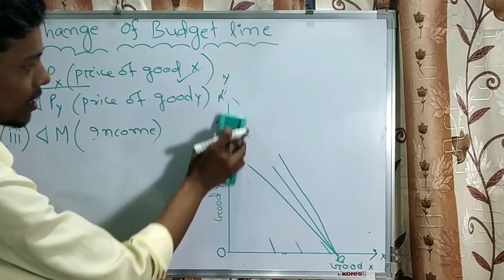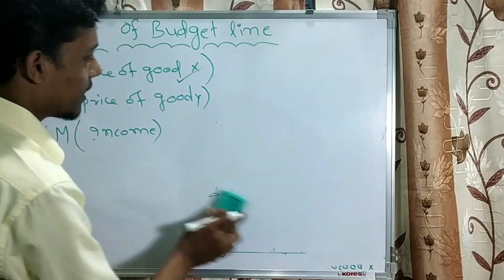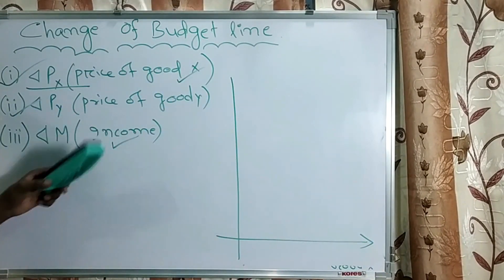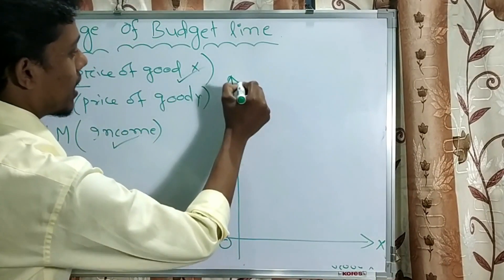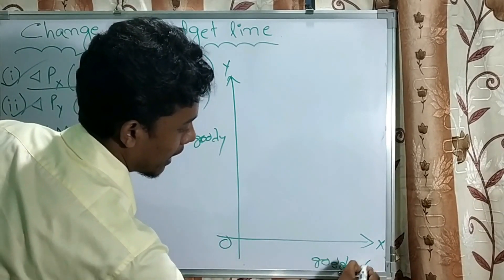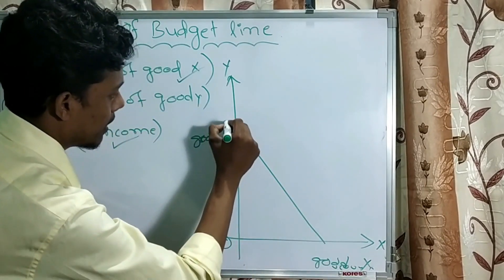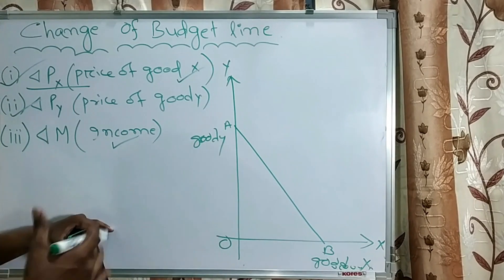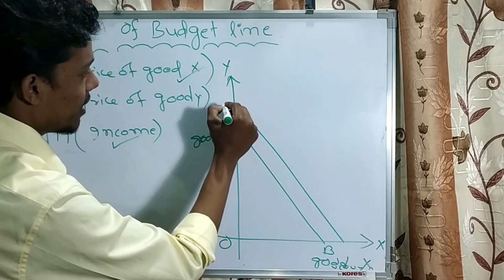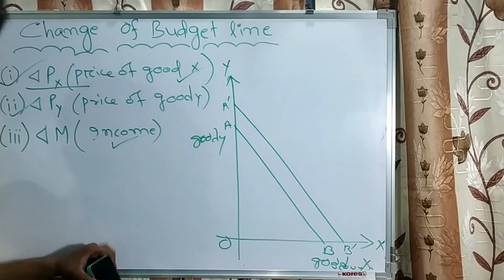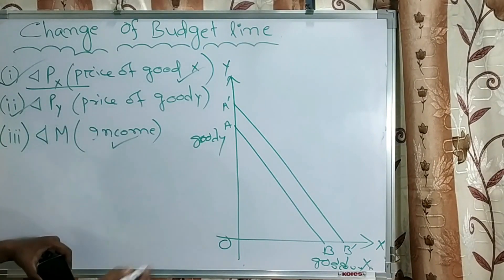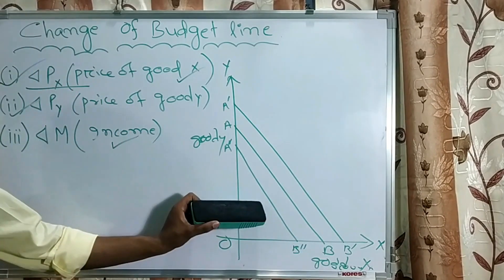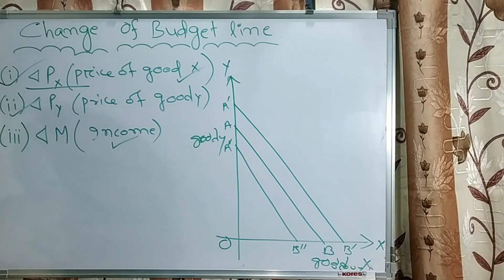In the third case, if the income level of the consumer changes — this is good X on the x-axis and good Y on the y-axis, with AB as the normal budget line. If the income of the consumer increases, his purchasing power also increases and the budget line shifts to the right, to A dash B dash. If the income level decreases, the budget line shifts to the left, meaning his purchasing power has decreased.